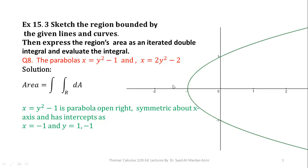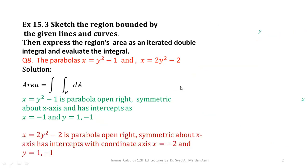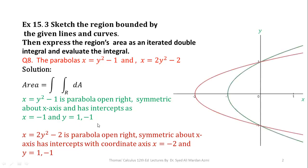After this, we will learn about second parabola. The second parabola x = 2y² - 2 is a parabola which is open right because the coefficient of y² is positive. It is symmetric about x-axis and has intercept with coordinate axes as x = -2 and y = ±1. Please note that both parabolas have same intercepts along y-axis.